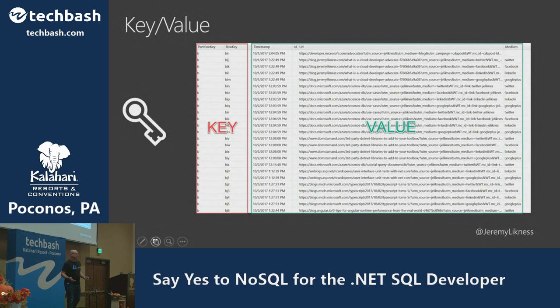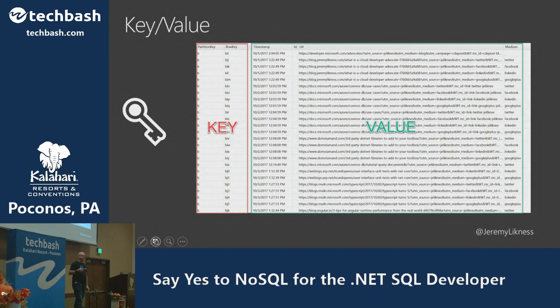Key-value is really just a dictionary that you persist to disk. It's optimized for the scenario where you know the key and you're looking up the value. One example: a user logs into your site and you have user preferences — you have the user's ID and want to quickly grab and manipulate that data. Another example is a link shortener tool that takes a short code and maps it to a long URL — a perfect use case for this type of database.